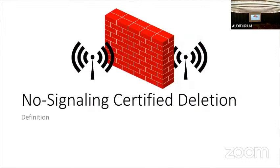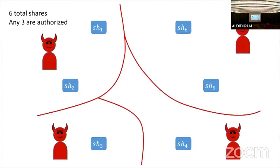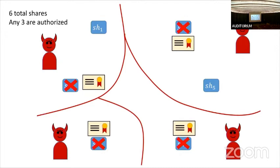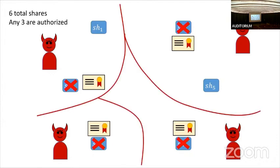Let's start with the definition for no-signaling certified deletion. We split our shares — say six shares where any three are authorized. The adversary gets to partition these shares into unauthorized sets, so at most two shares in each set. They operate on each of these sets in a local manner — no communication across sets — and must produce deletion certificates. They are allowed to share entanglement across sets, though.